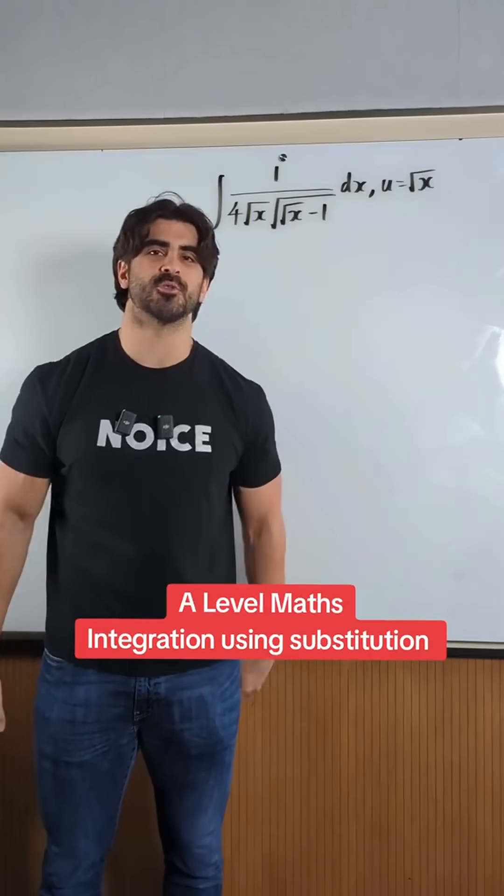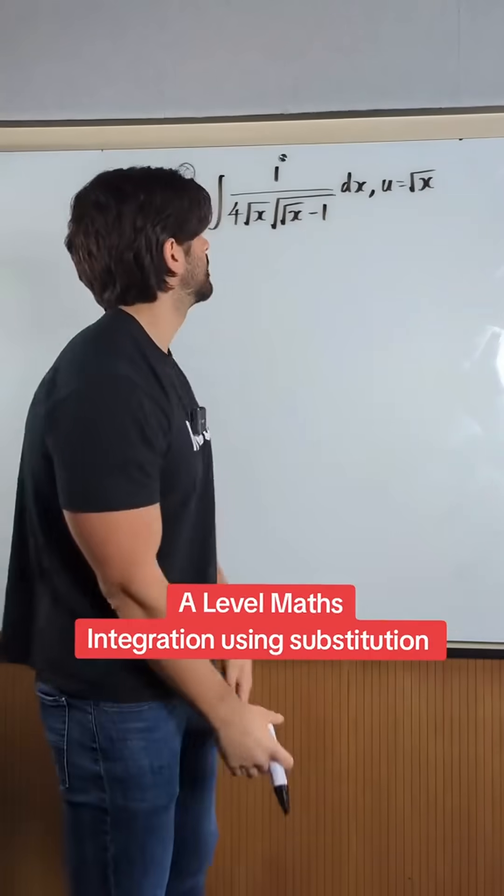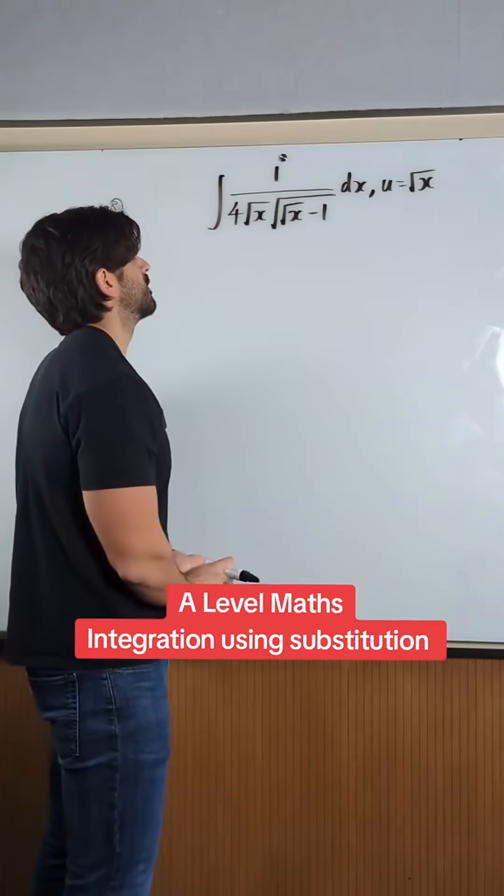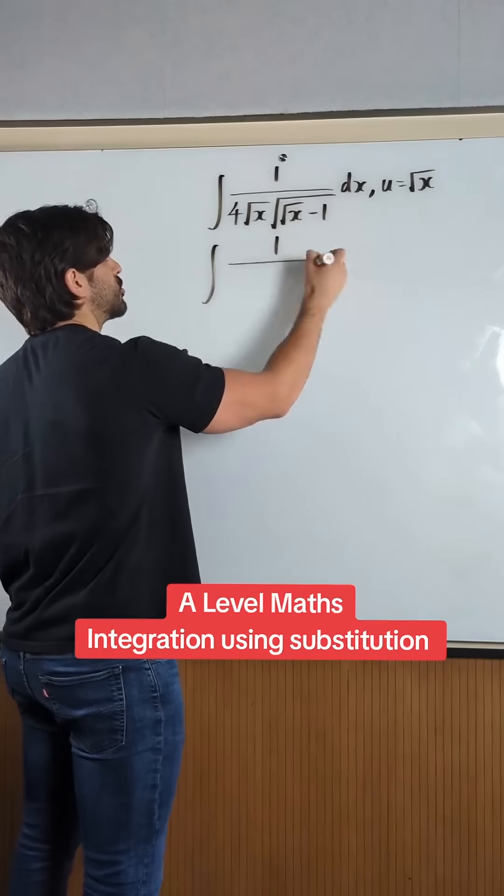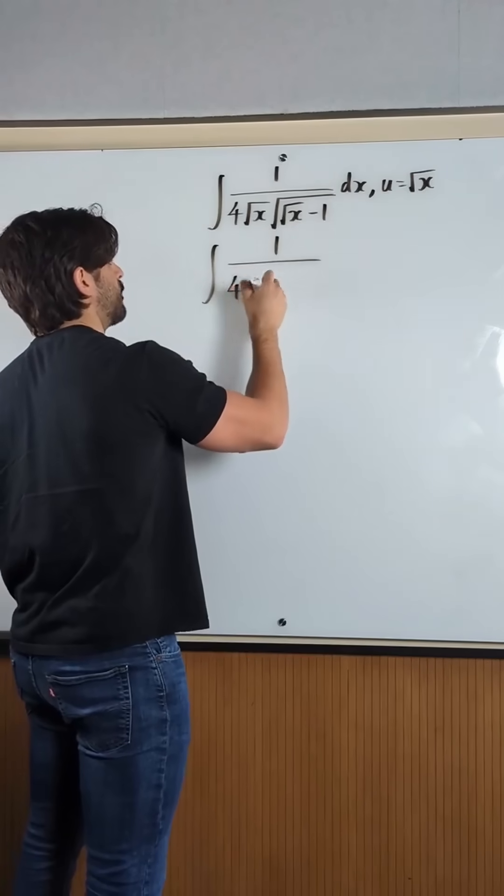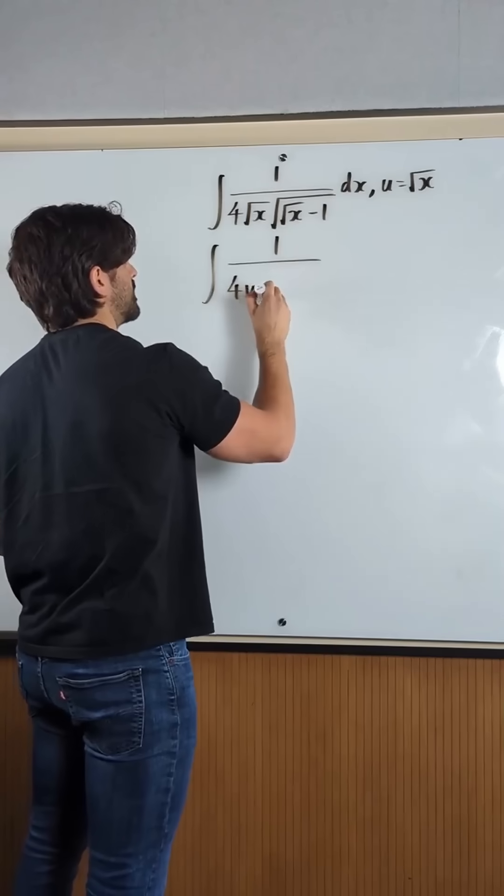Let's look at a question where you actually need to use substitution. So here we go, let's do this one. I immediately see that the substitution is u equals root x, so I get 4u. Then we get this.